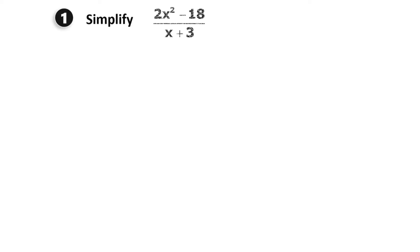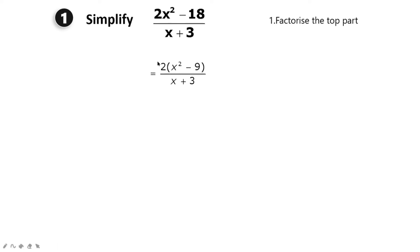Let's begin question number one: simplify (2x² - 18)/(x + 3). The first step is to factorize the top part. Factorizing 2x² - 18, since 2 is common in both terms, we factor out 2, leaving 2(x² - 9). We leave the denominator, x + 3, as it is.